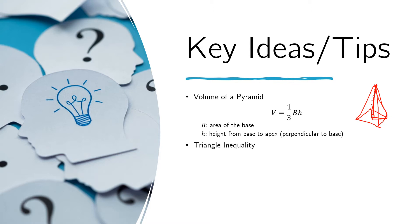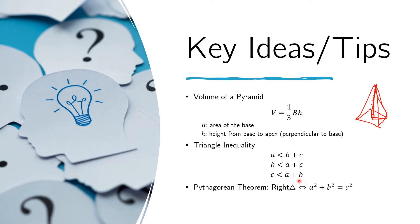We also want to recall the triangle inequality, because we are dealing with triangular faces. That is simply the fact that if you take any one of the sides, its measure should be smaller than the sum of the other two sides. Lastly, we review the Pythagorean theorem: if you have a right triangle, then A squared plus B squared equals C squared. And the converse is also true — you have a right triangle if and only if this holds.